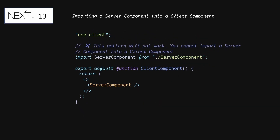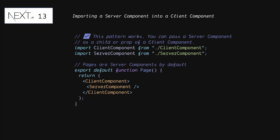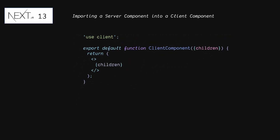When trying to import a server component into a client component, using the import statement will not work — you are not allowed to import a server component directly into a client component. Instead, you can pass the server component as a child or as a prop of a client component. You can do this by wrapping both components in another server component. As shown here, the page component — which is a server component by default — wraps both the client component and the server component. The server component is then passed as a child to the client component, which receives it via the children prop and returns it.